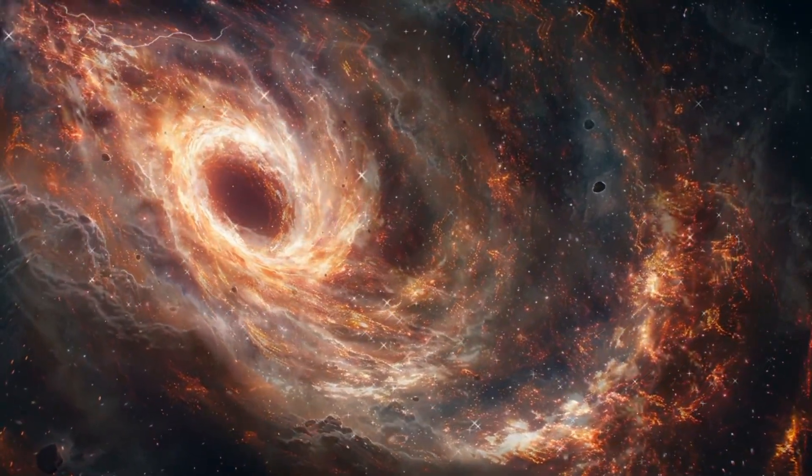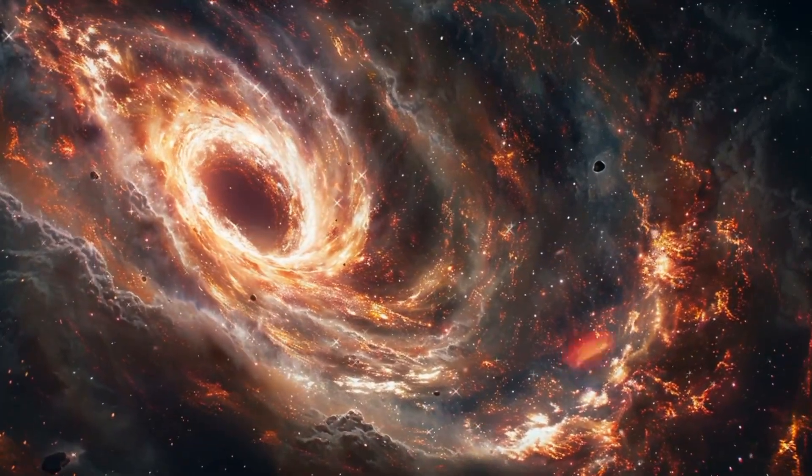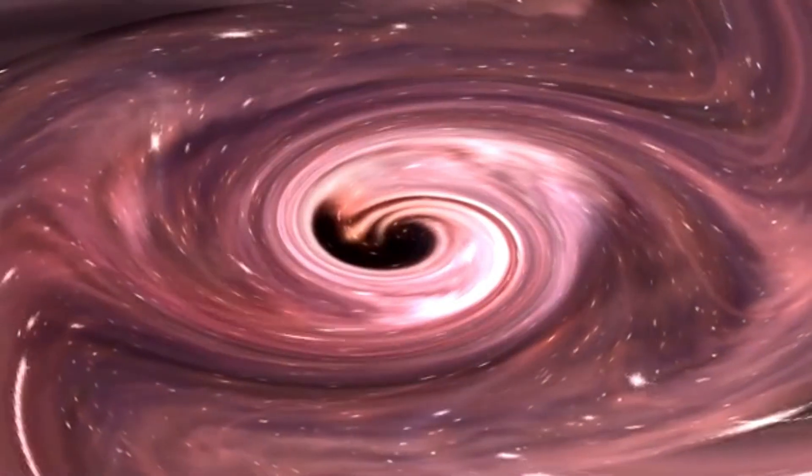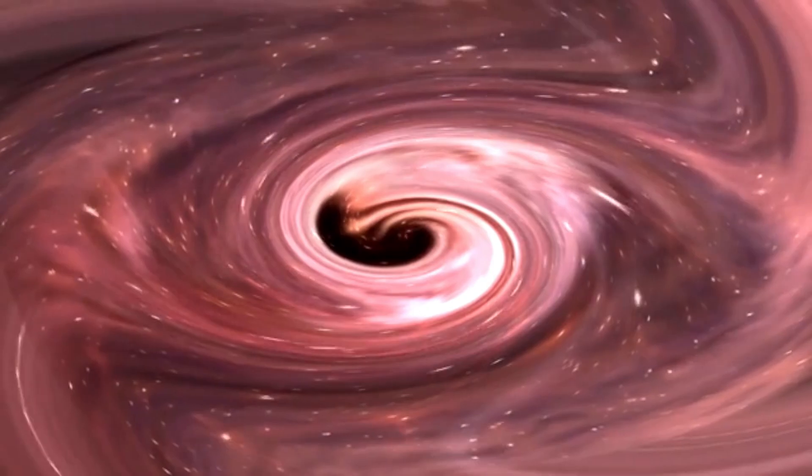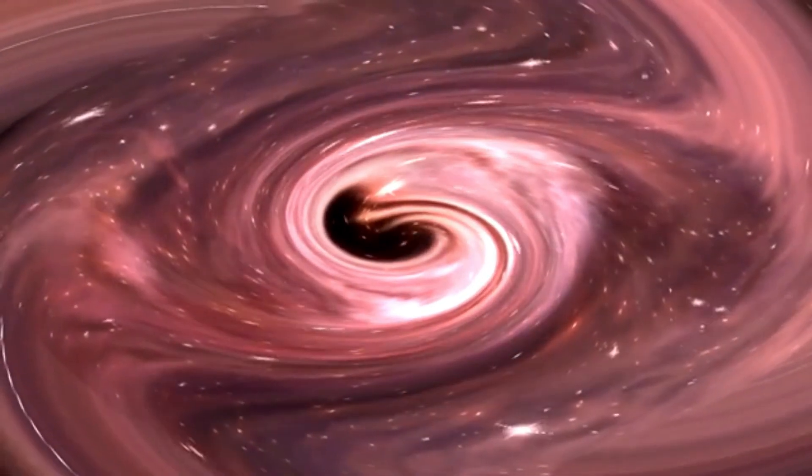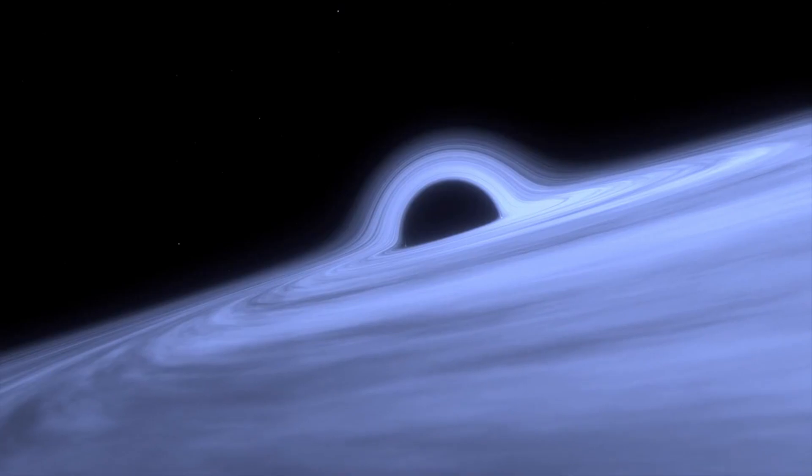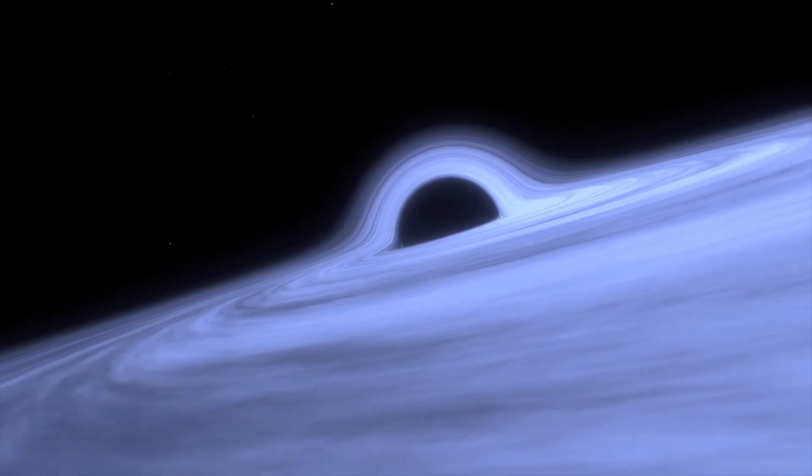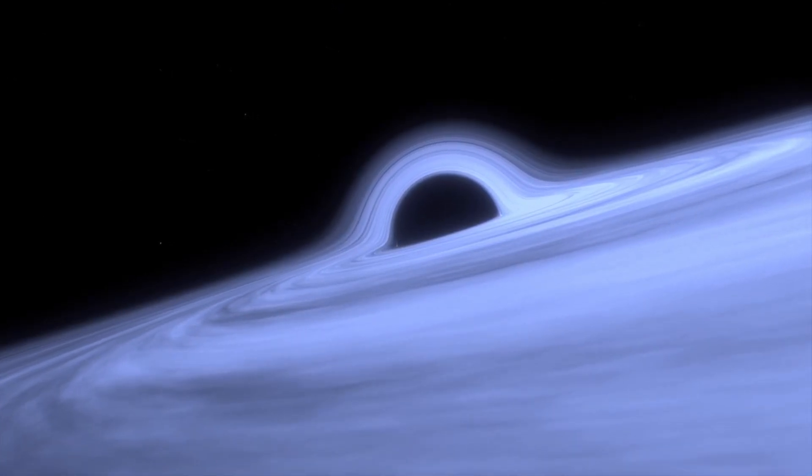Smaller stars, when they die, transform into something called neutron stars, which are super dense but not dense enough to trap light. However, if a star is about three times the mass of our sun, it collapses under its own gravitational pull, forming a black hole.